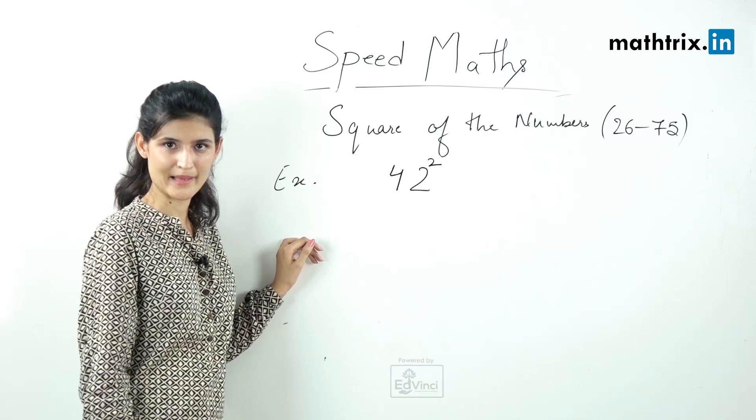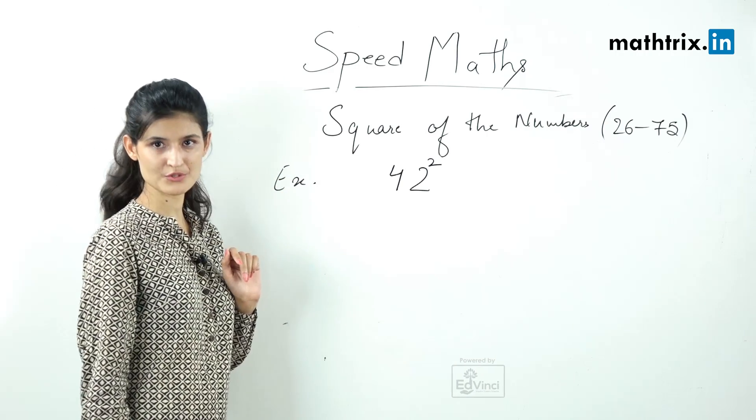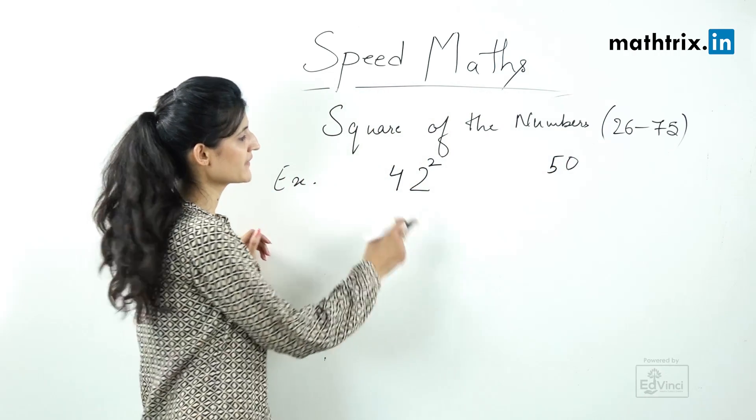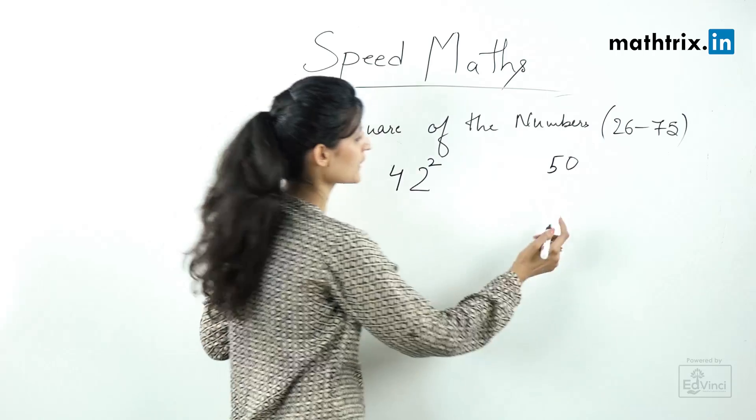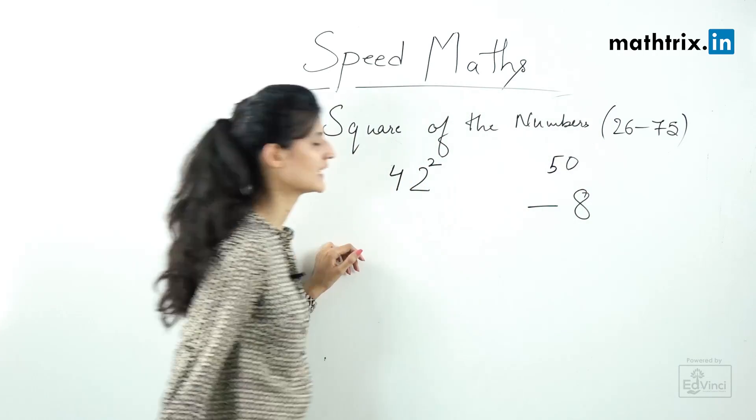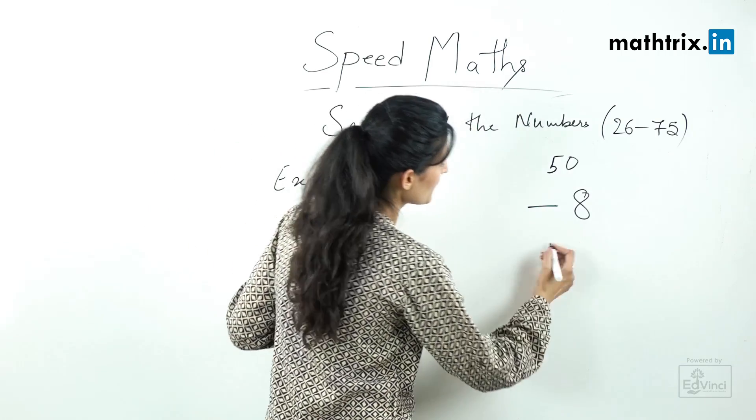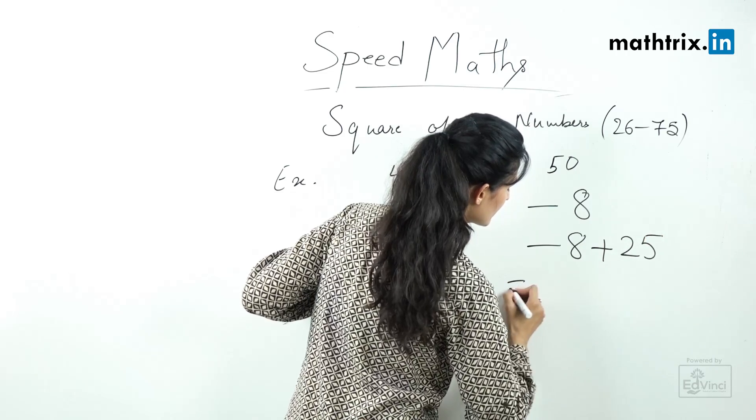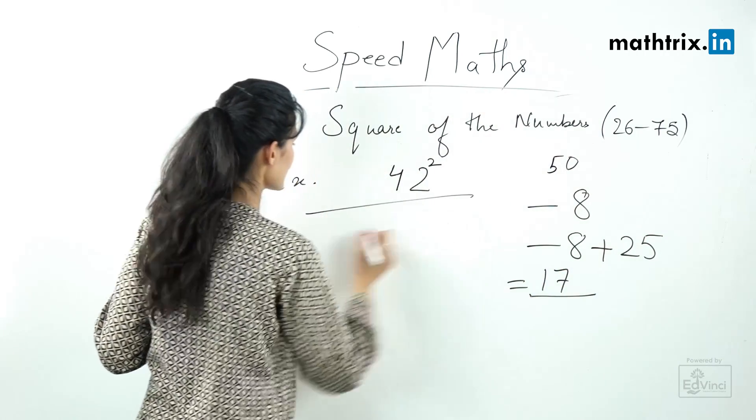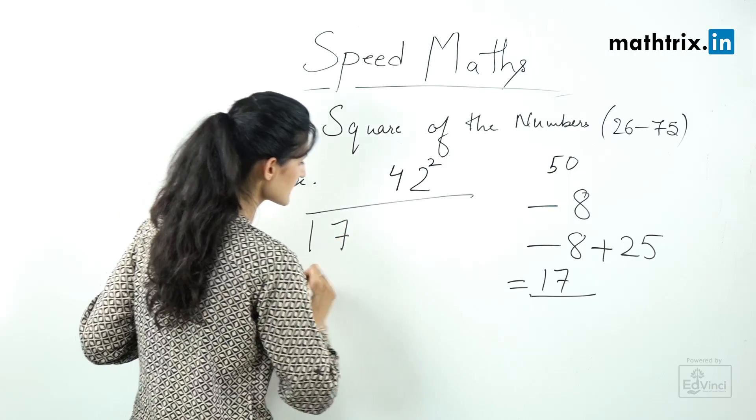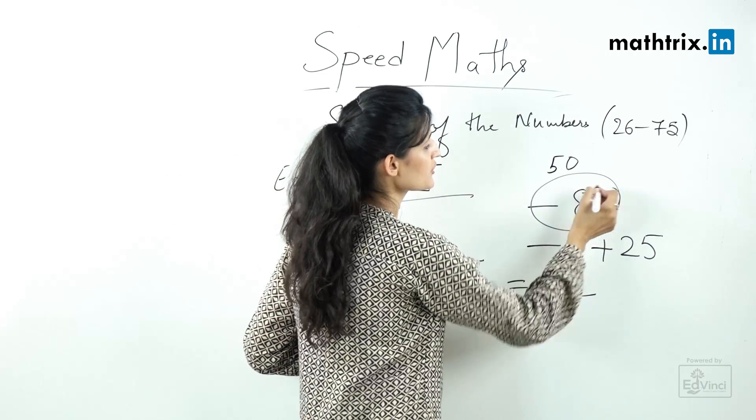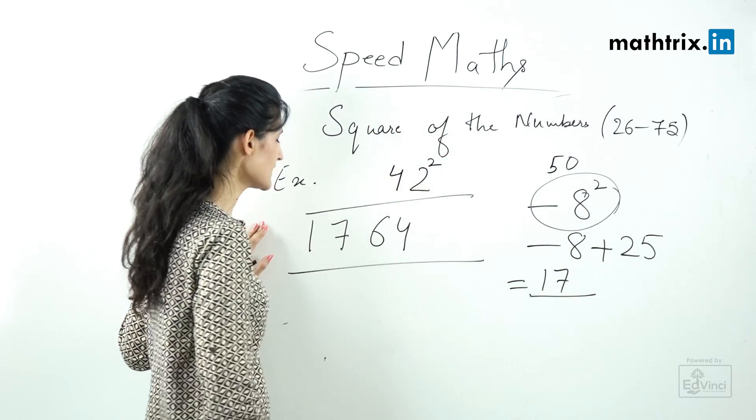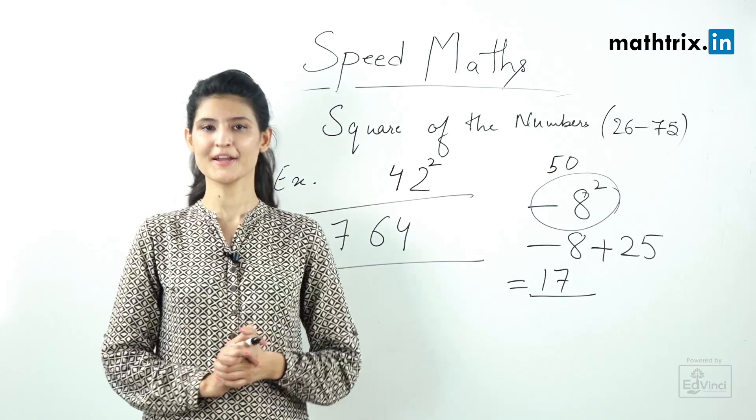Let's move to the next example in which we are doing 42 square. So step 1, base 50. Step 2, difference of the number with the base which is minus 8. Step 3, add this number to constant 25 which is 17. So we'll write 17 here, the first two digits. Step 4 is square the difference, and the square of the difference is 64. So our answer is 1764.